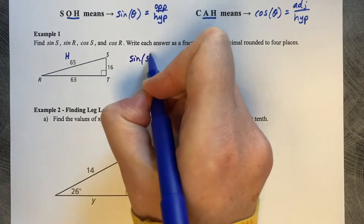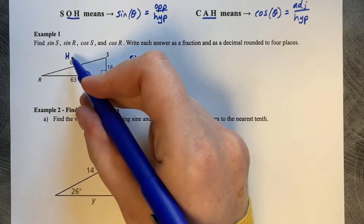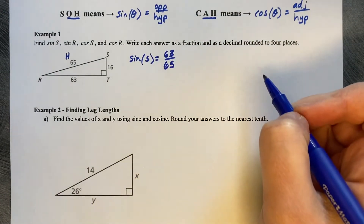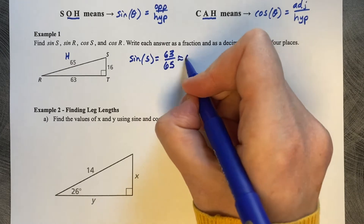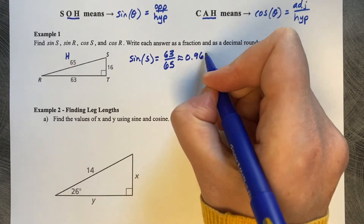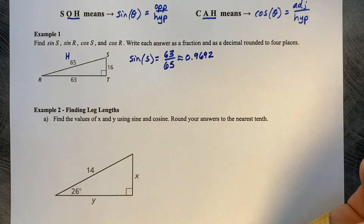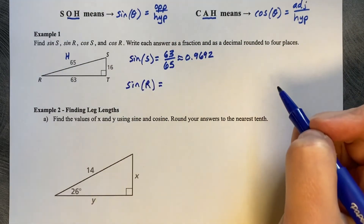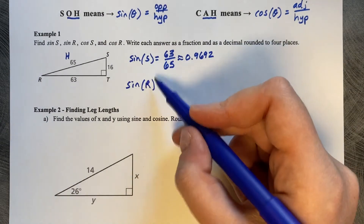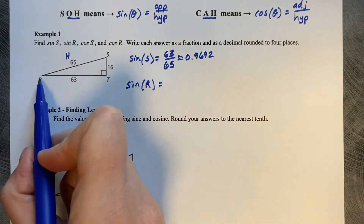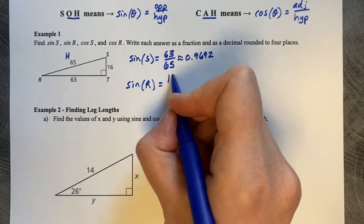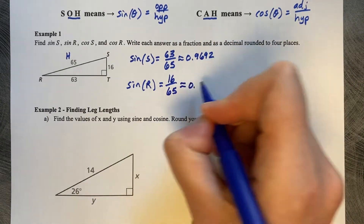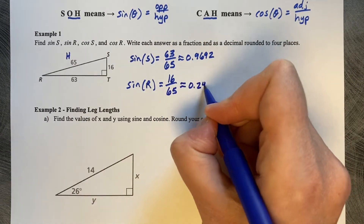The sine of S is going to be opposite over hypotenuse, or 63 over 65, which is approximately 0.9692. Now the sine of R — opposite is 16, so that's 16 over 65, which is approximately 0.2462.